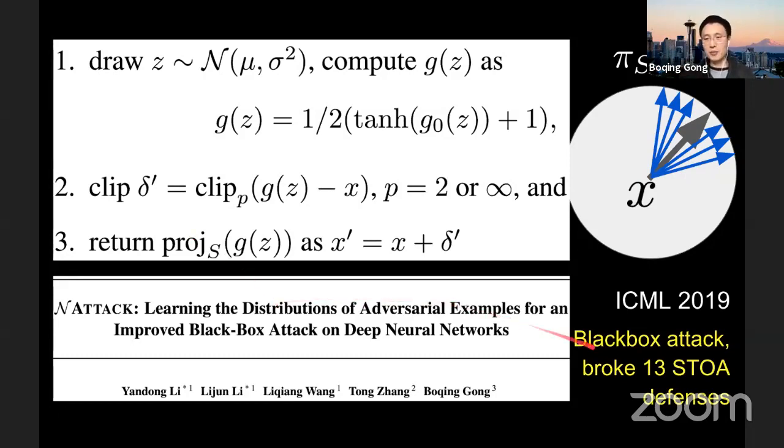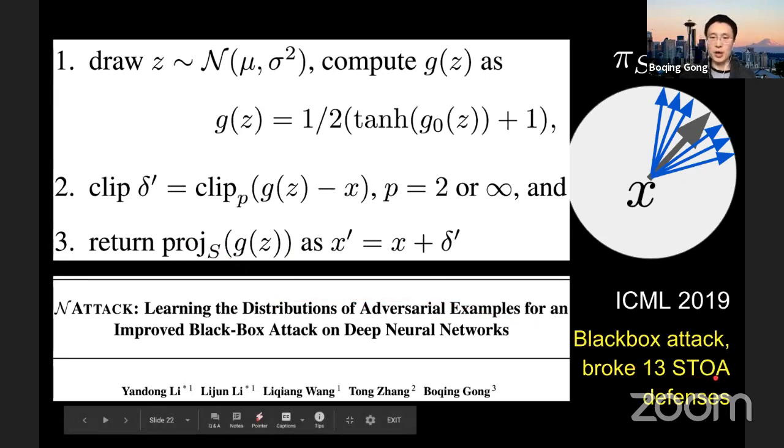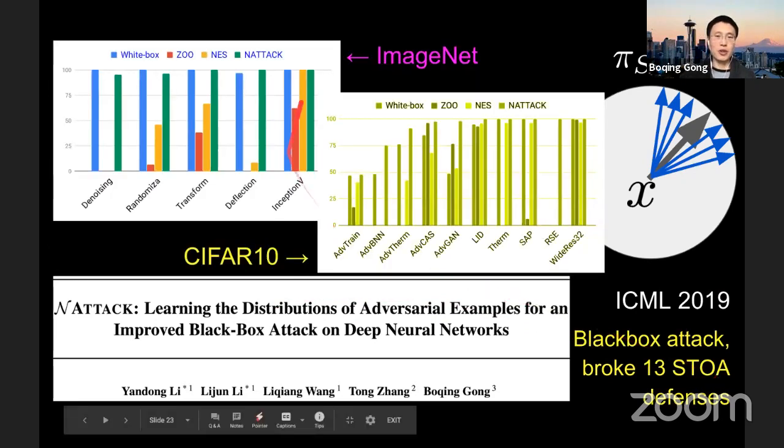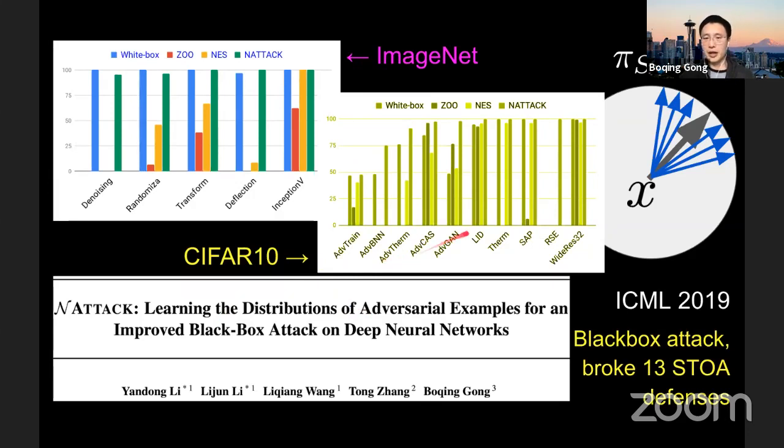We tested about 13 state-of-the-art defense algorithms published at that time on both ImageNet and CIFAR-10, and you can see we really got a very good success rate. So we can successfully attack almost all of them, except some other strong, some of the models are very strong, so we can partially hear about 40% of the success rate. But still, very good. You don't want to deploy a model which has only 40% accuracy in the real world.